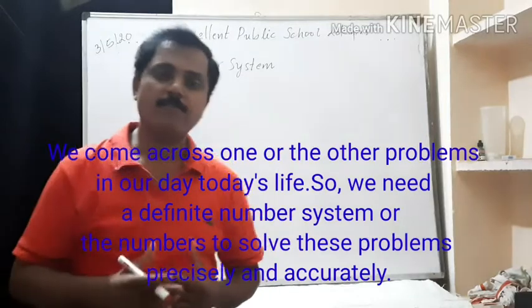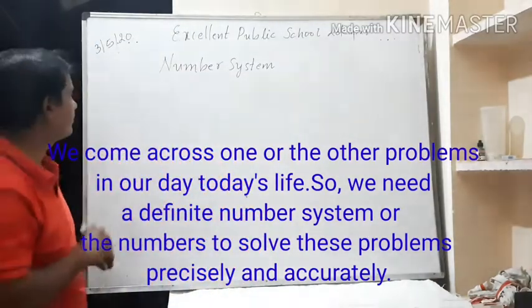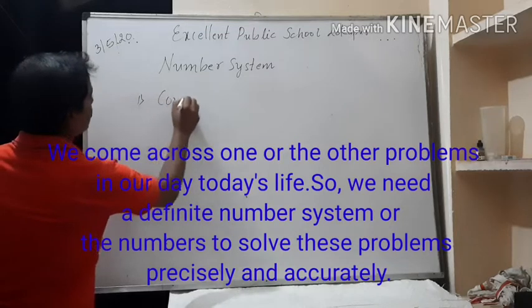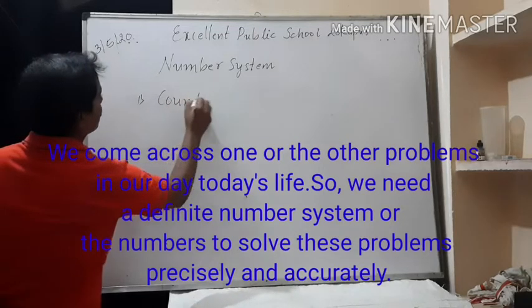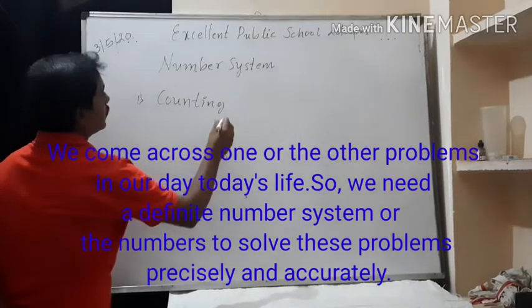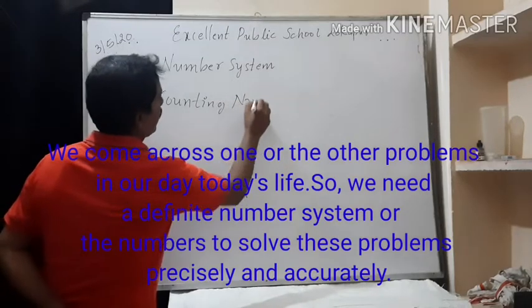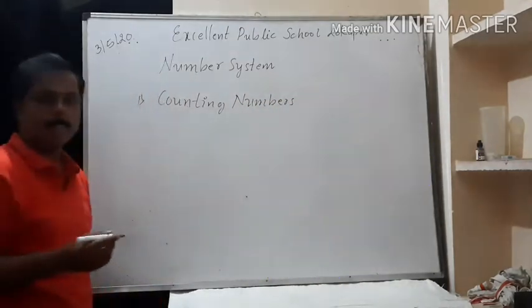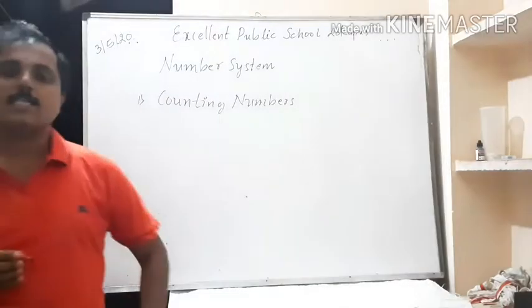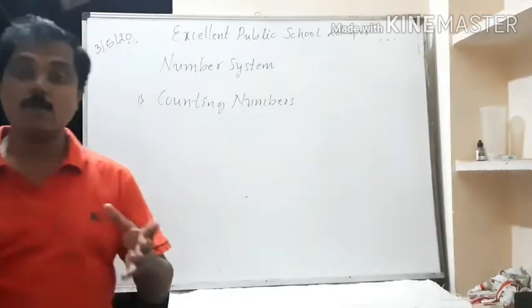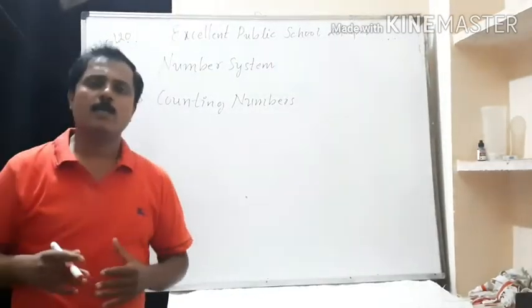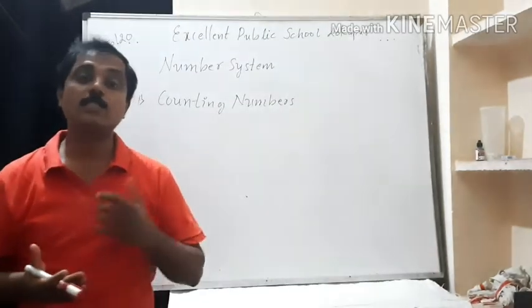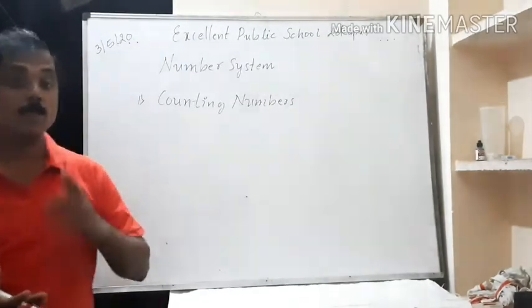The first type of numbers are counting numbers. These are the numbers used for counting. Counting of things will start from one.